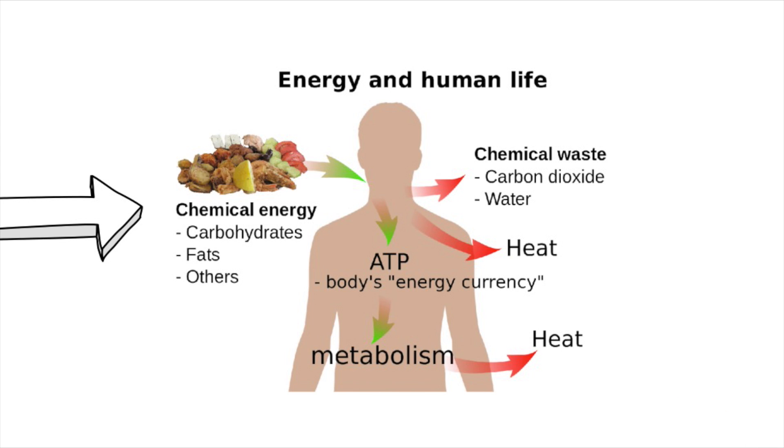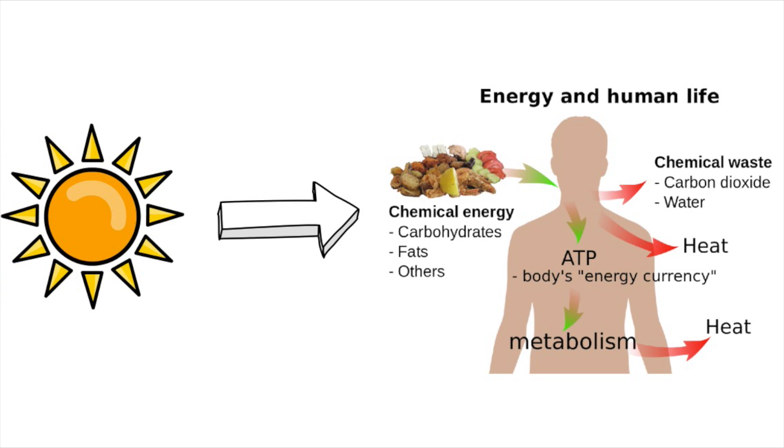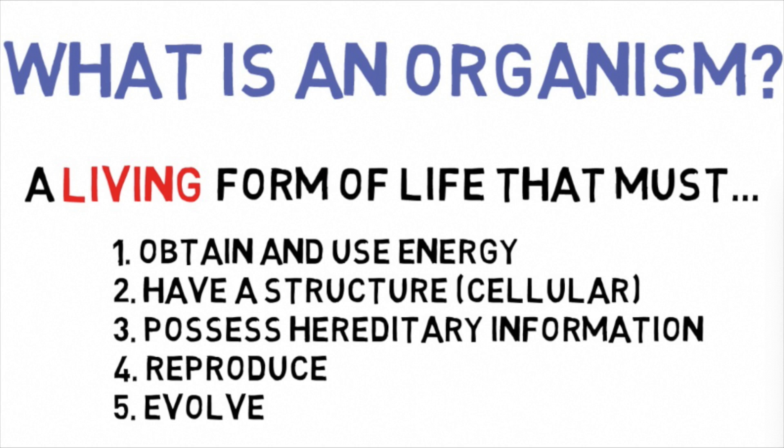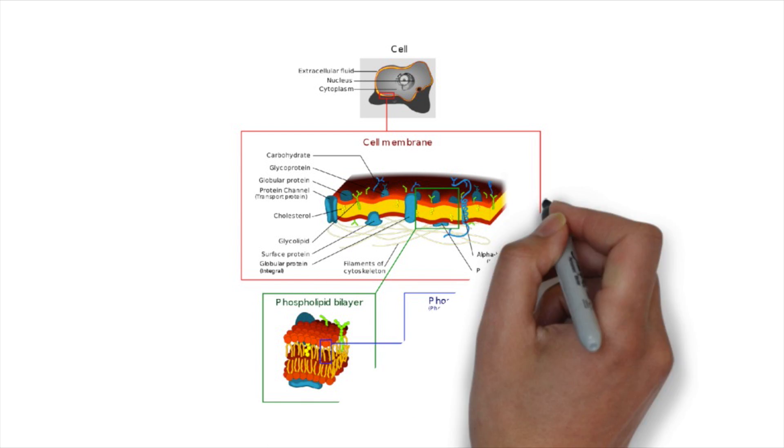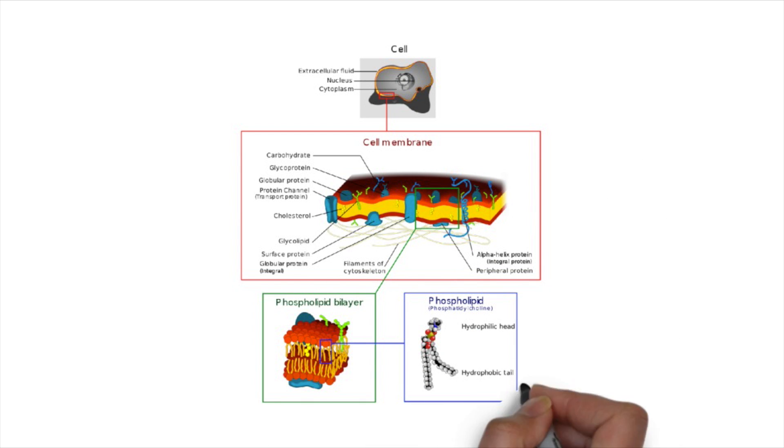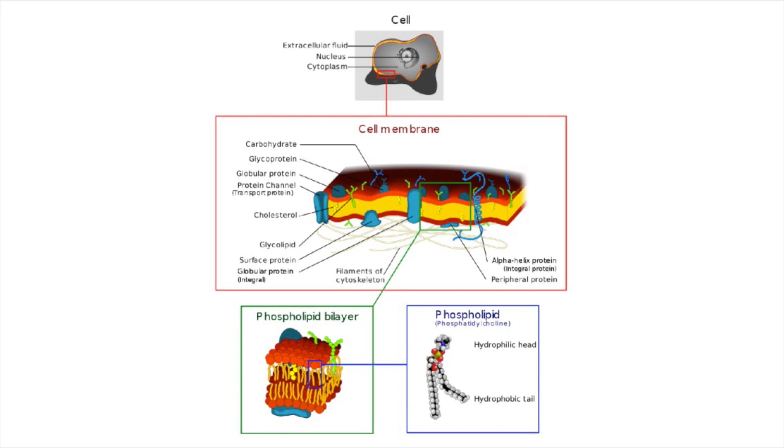The second characteristic is structure. At the most basic level, a single cell has a structure. Its components inside, called organelles, are bound by a plasma membrane, which is very important. The plasma membrane keeps the cell bound and kept together. When we think of human structure, we think of skeletons, but at the very basic cellular level, an organism with at least one cell has a plasma membrane and structure.